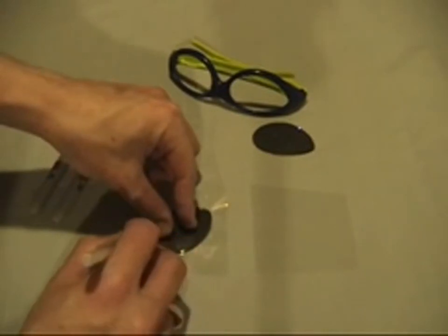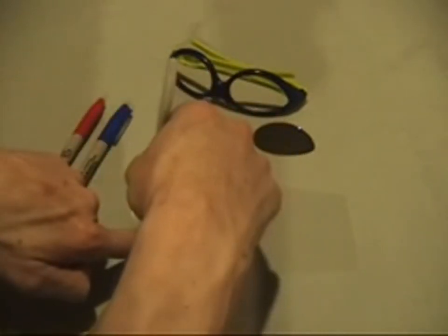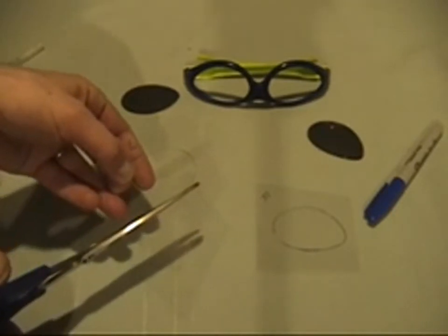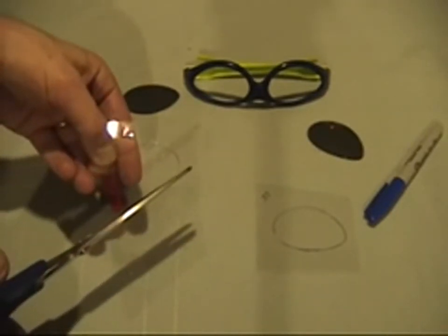Use the old lenses as a template. Simply cut them out along the inside edge of the line, and then color them with the red and blue markers.